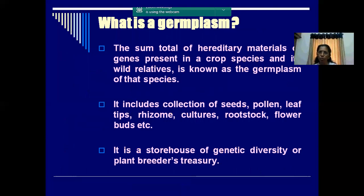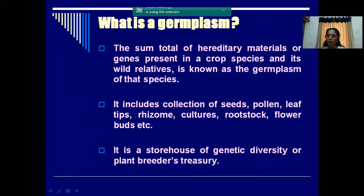Coming to the germplasm - what is germplasm? It is the sum total of all the genetic materials of all the genes present in a crop species. So if you have green gram or black gram - Vigna mungo or Vigna radiata - what is the diversity, the variability present in the crop, their wild relatives, everything, and its breeding derivatives, everything will constitute the germplasm of that particular species. It can include seeds, it can include the pollen of the crop, leaves, whatever material that can be propagated or can give rise to the next crop is called germplasm.